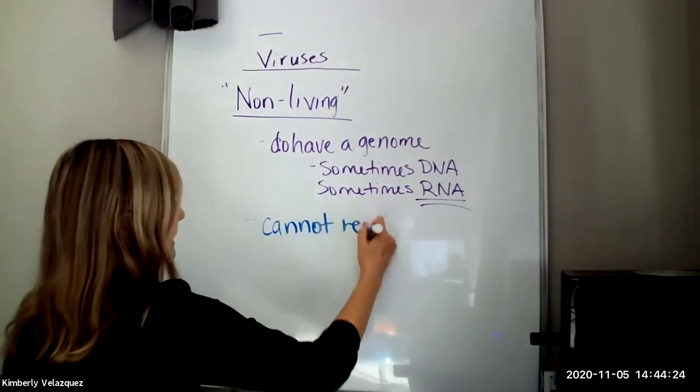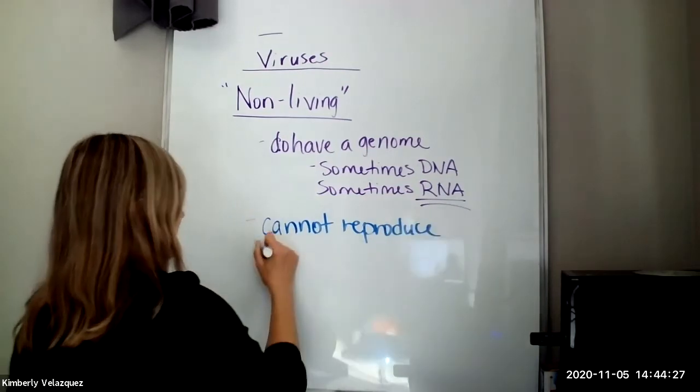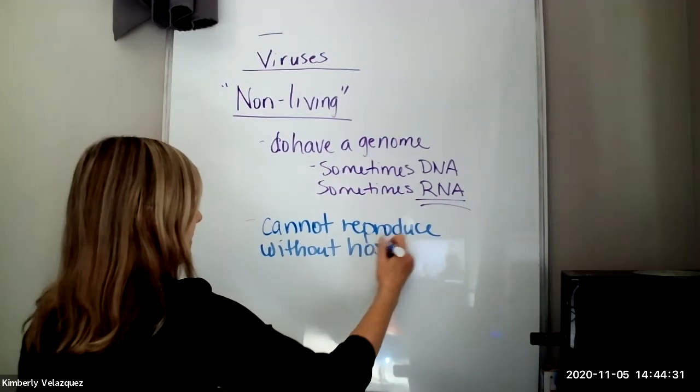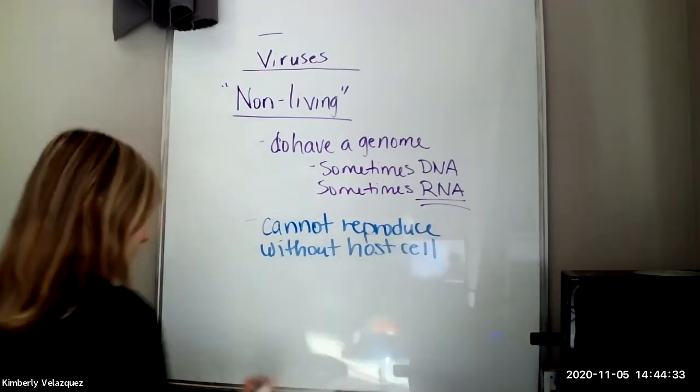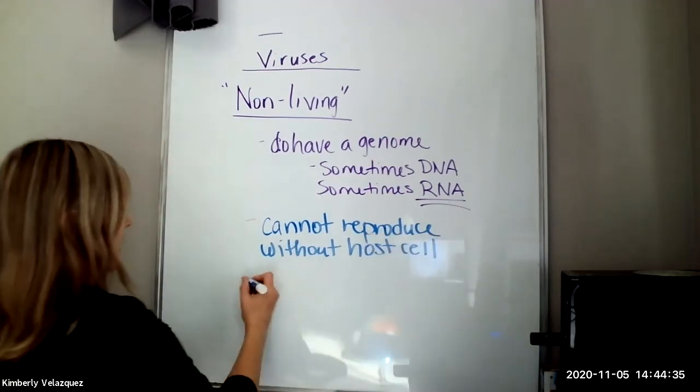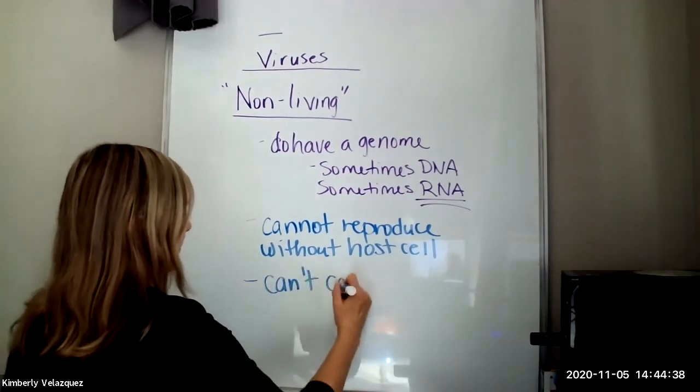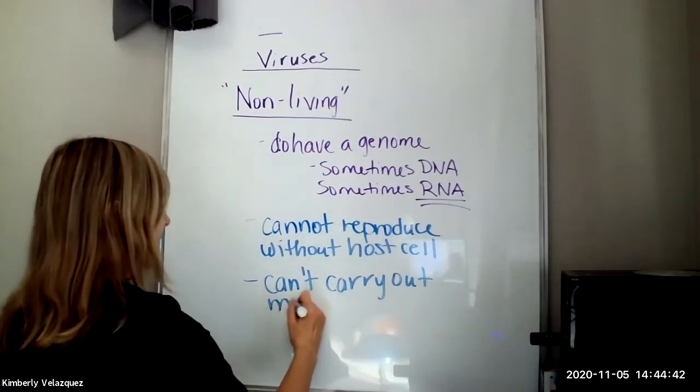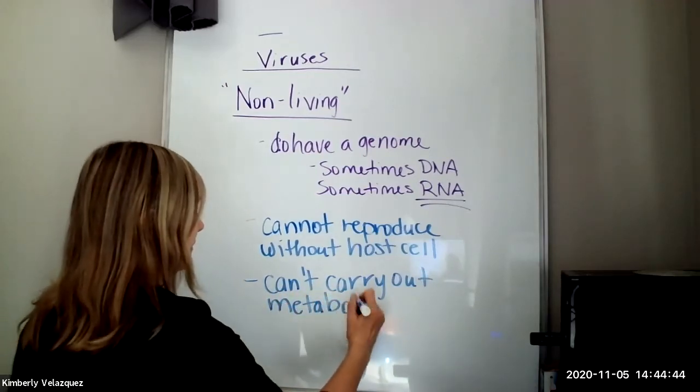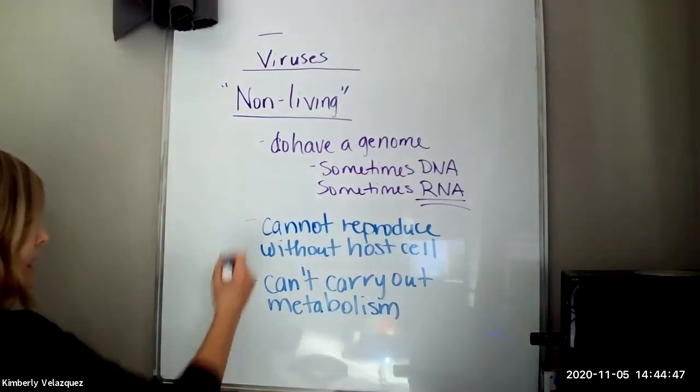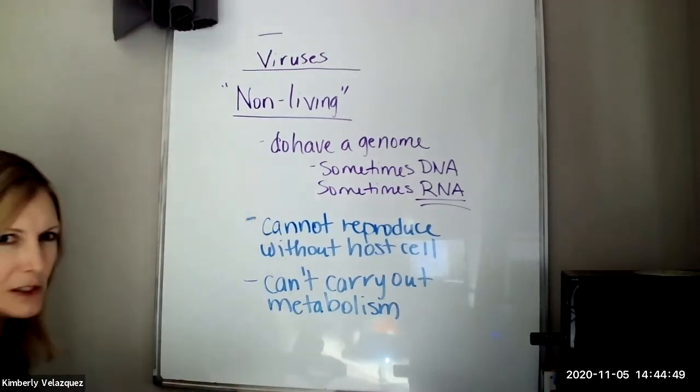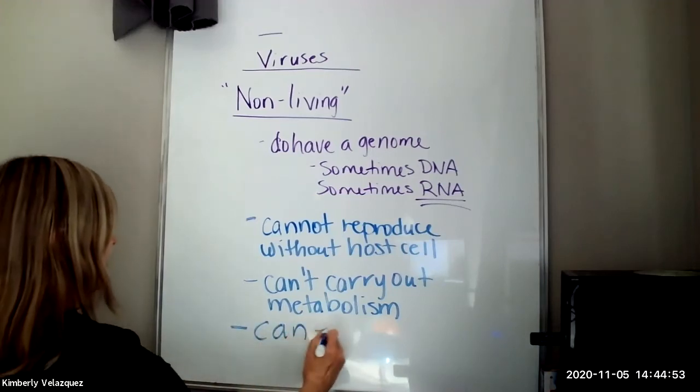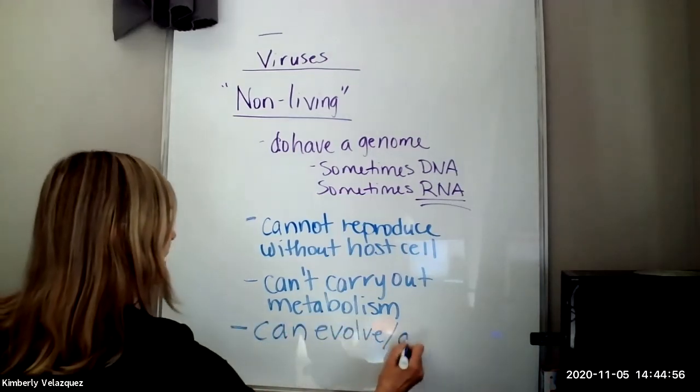They are missing a lot of the necessary things to reproduce and we're going to talk about what those things are today. They also just can't carry out basic metabolism, including the fact that they can't make their own energy.